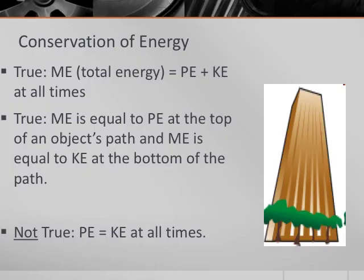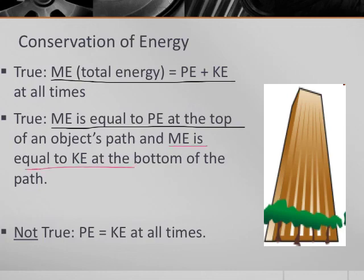Some rules to live by when dealing with a conservation of energy problem. At every single point along the ball, the object's pathway, ME is equal to PE plus KE. That is always a true statement. That's always an equation that can be used if you know one energy and not the other. Another true statement is that ME is equal to PE at the top, or ME is equal to KE at the bottom.